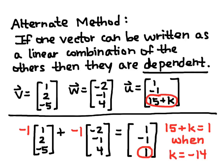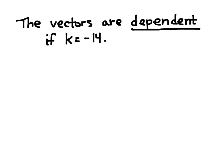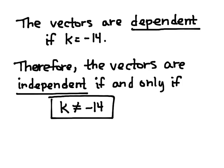This tells me that the vectors are dependent if K is equal to negative 14. So to make them independent, I let K not be equal to negative 14. So the vectors are independent if and only if K is not equal to negative 14. Now this is the same answer as it should be to the first method that we used.